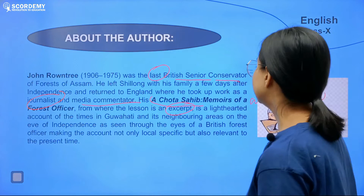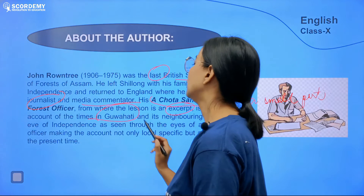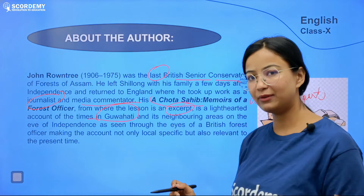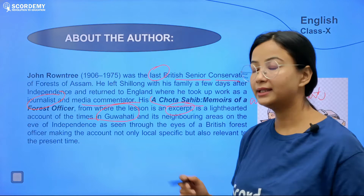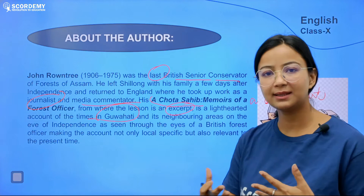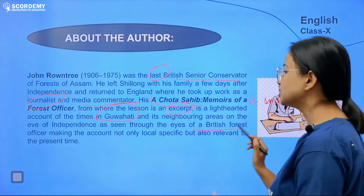It is a light-hearted account of the times in Guwahati. We are going to read about Guwahati and its neighboring areas on the eve of independence. The time frame is the pre-independence era — a day before independence of India. He is writing about Guwahati and neighboring areas as seen through the eyes of a British forest officer.